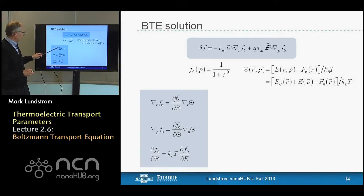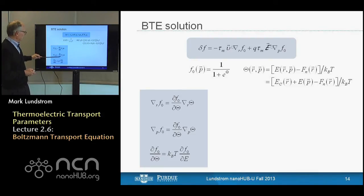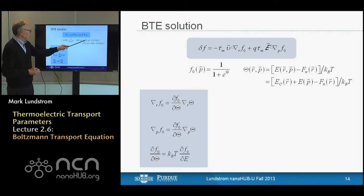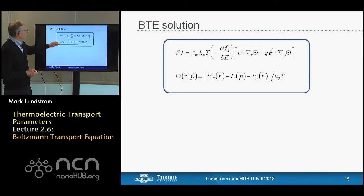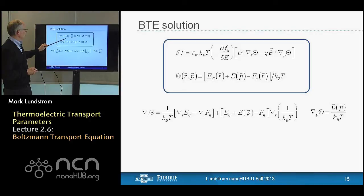We're going to assume we're near equilibrium: the probability that a state is occupied is a large equilibrium part f-naught, plus a small deviation from equilibrium delta f. We'll solve for that small deviation. Throwing away the time derivative and using the relaxation time approximation, we have our steady-state Boltzmann equation. We can solve this by approximating the spatial gradient of the distribution function by the spatial gradient of the large near-equilibrium part, and do the same for the gradient in momentum space.